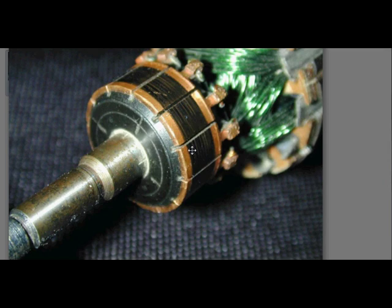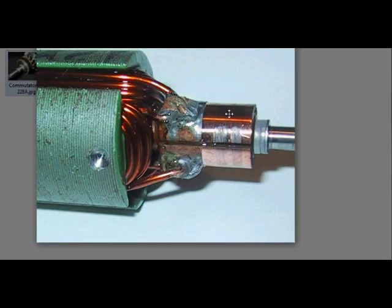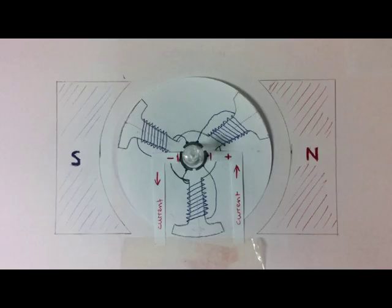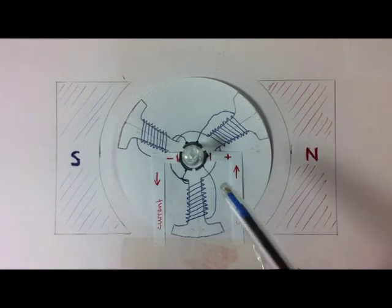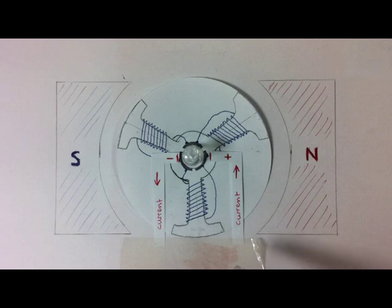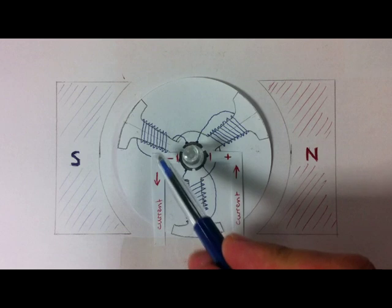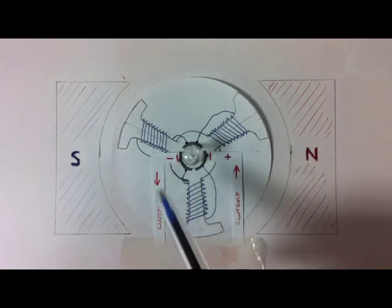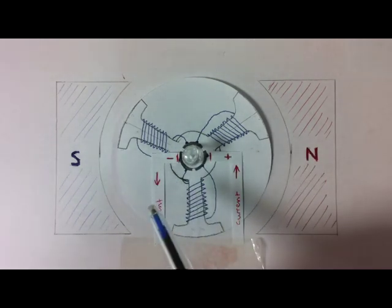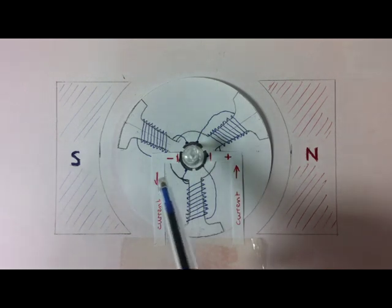It's connected to the armature of the motor, and basically a commutator's job is to transfer the current from the battery, or the current source, via the brushes. These don't look anything like brushes in real motor, but I'll just put them there for illustrative purposes.